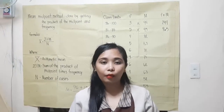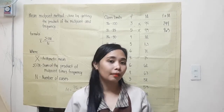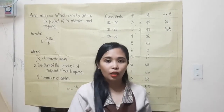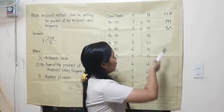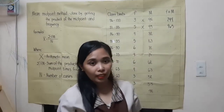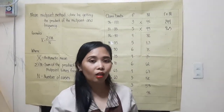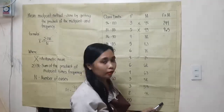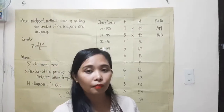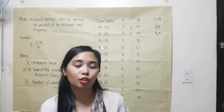Now, I want you to compute the summation of the frequency times the midpoint. You need to multiply the midpoint by its corresponding frequency, and then add all the products to get the summation. You may pause this video and get back as soon as you finish.